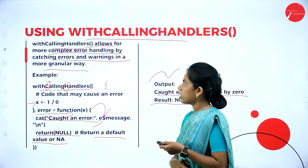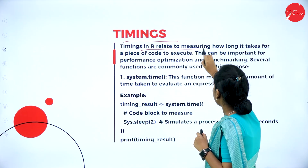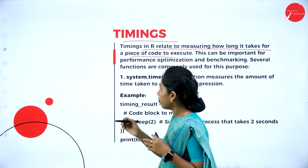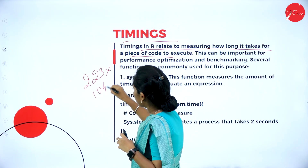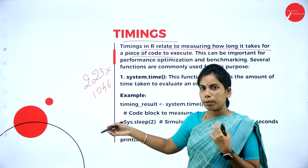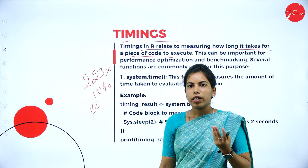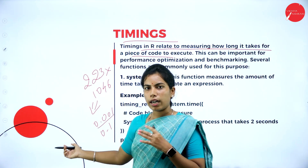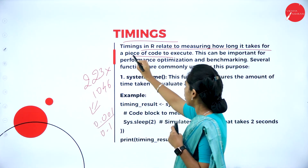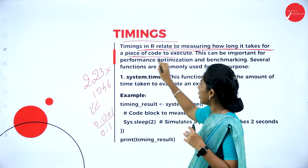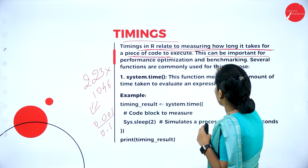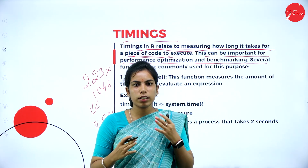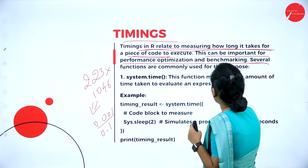Timings in R relate to measuring how long it takes for a piece of code to execute. For example, multiplying 223 by 1046 takes a human some time, but a computer gives the result in 0.001 seconds. Timing is important for optimizing and benchmarking code. R provides several special functions to measure timing while running R code.